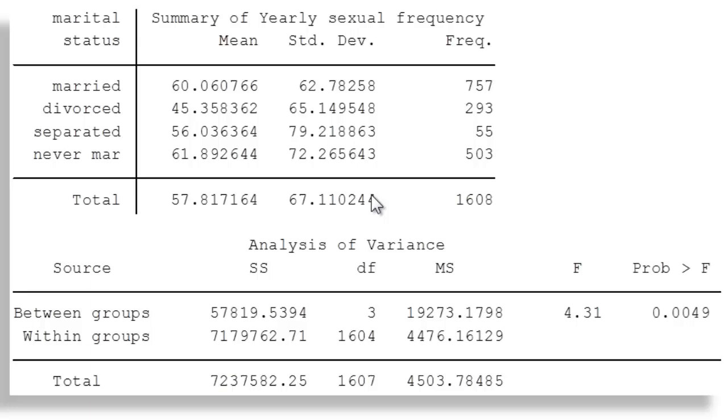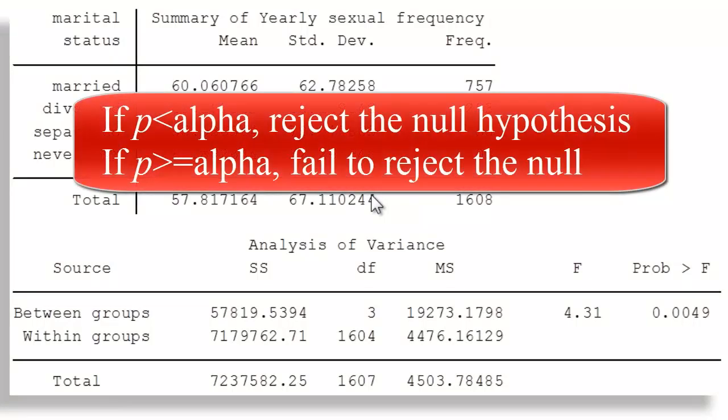We know that whatever our alpha value is, say alpha .05, we could compare the p-value to that alpha value and make a statistical decision. In this case, if I set alpha equal to .05, my p-value is less than .05, and I would reject the null hypothesis. The null hypothesis here is that there's no difference in average sexual frequency across these different marital status categories.